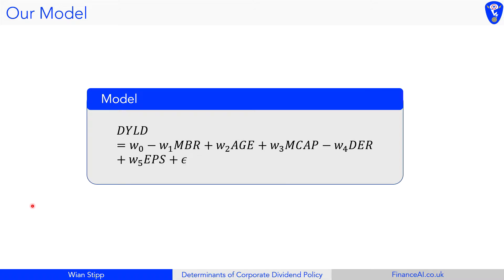In conclusion, the model says that dividend yield equals a set of weight parameters — w0, w1, w2, and so on — multiplied by the ratios and components from the theories we looked at: market-to-book ratio, age, market capitalization, leverage, and earnings per share. We add epsilon for the Gaussian noise, as this is a standard model. This is a target model based on a latent index — what we're observing is the dividend yield.